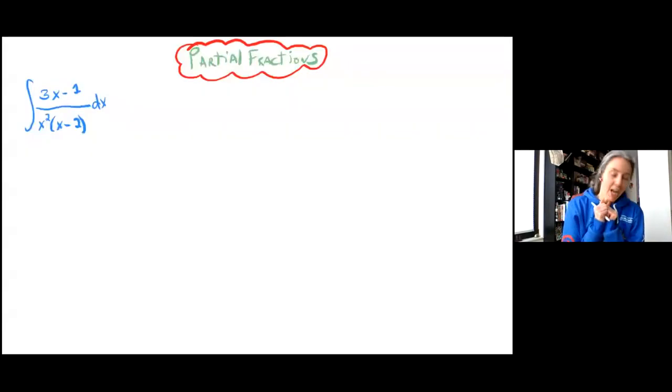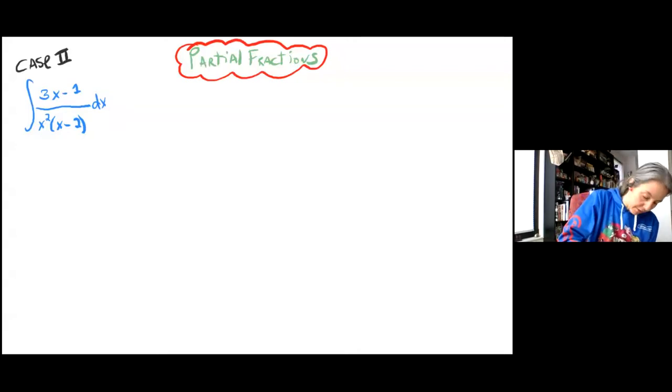Hi guys, Audrey here. So we're going to do one last partial fractions example. This is going to be a Case 2 example. We can see that immediately because the denominator is already factored. The thing that makes this Case 2 is the fact that x occurs two times.